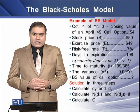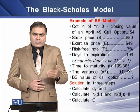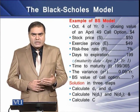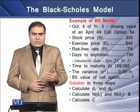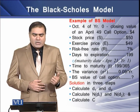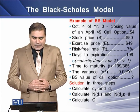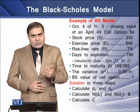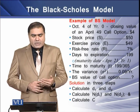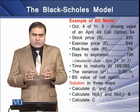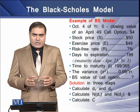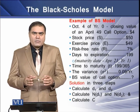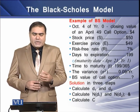The time to maturity as a ratio to the year is 199 over 365, which gives the value of variable T. The variance for sigma squared is 0.09 per year. Using these variables, we can determine the value of this call with the help of the BS formula.